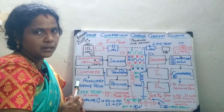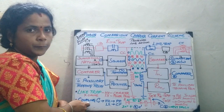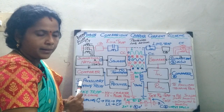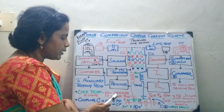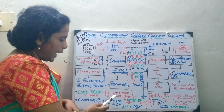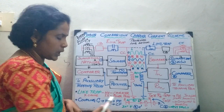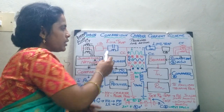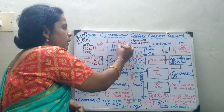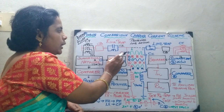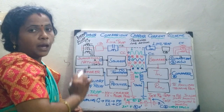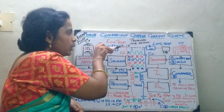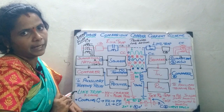Now we will see the three main components and their functions. The first is the line trap — a parallel resonance circuit that offers high impedance to the carrier frequency and low impedance to the power frequency. This means it does not allow the carrier frequency to mingle with the power line, but allows only the power frequency to pass through.